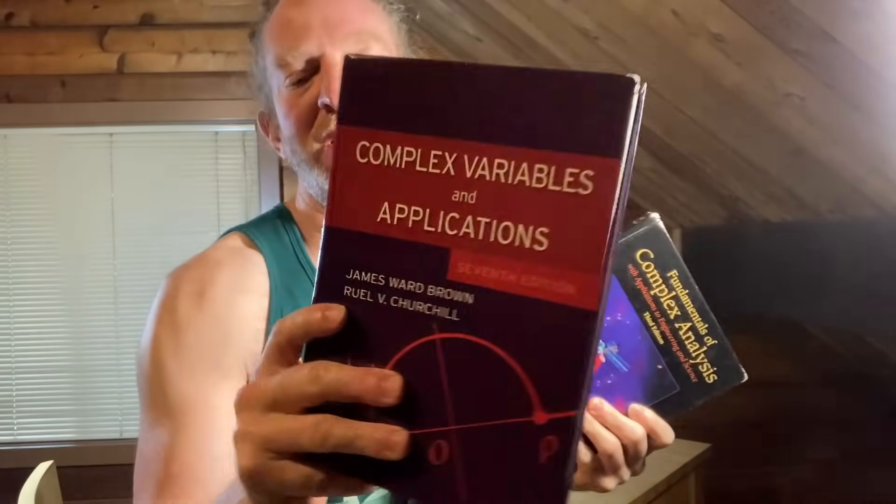Both great books on complex variables. Again, the one by Saf and Snider is my favorite. The price, however, is probably a little bit higher. And even used copies might be more expensive because there's just less of them available. Whereas this one is more popular and it's been around longer. It's the one by Brown and Churchill. I'll leave links in the description to both of these. And there's other good books too. I just wanted to pick two textbooks that you can use to learn complex variables.